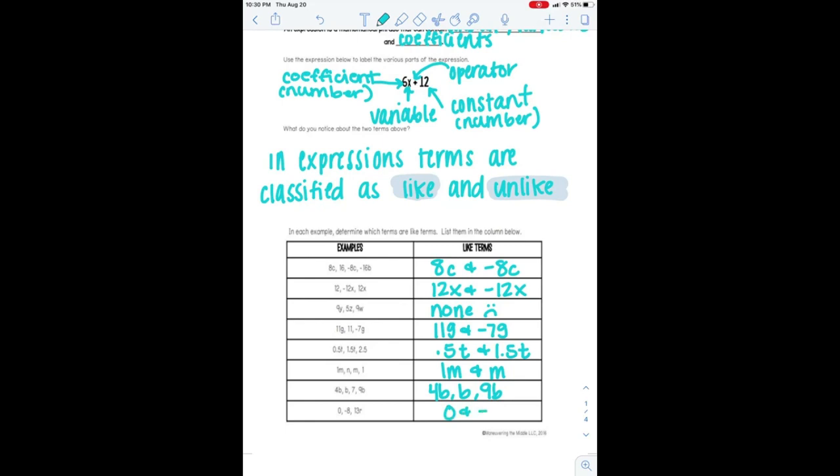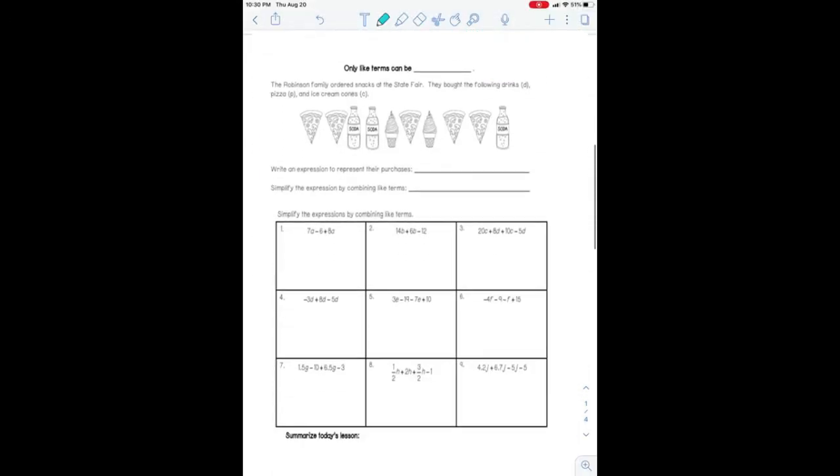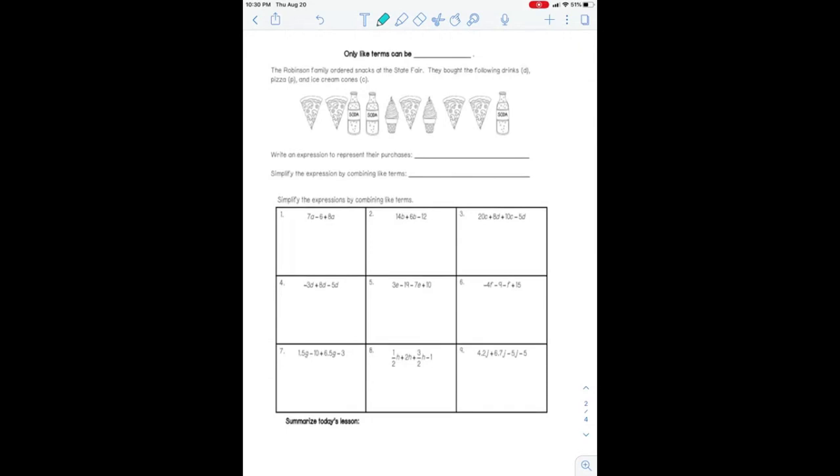And on this last one, 0 and negative 8 are actually going to be our like terms. So if two numbers both do not have coefficients or they are both constants, they are also like terms. So matching two numbers that both have no variable is the same thing as matching two numbers that have the same variable, okay? So constants are also like terms because they have no variable.